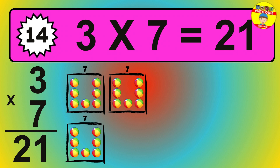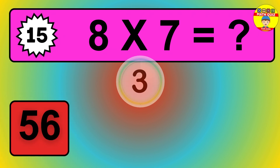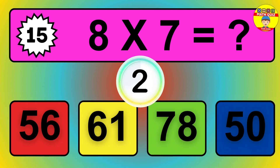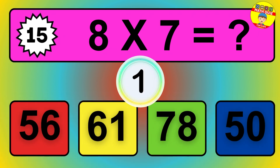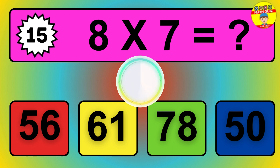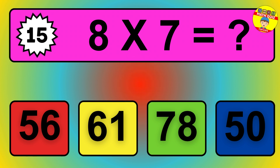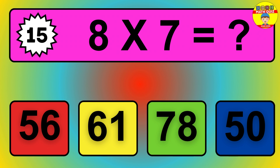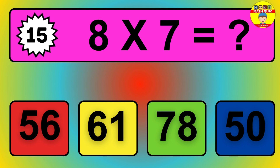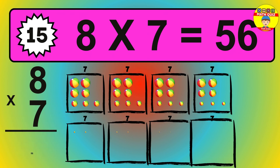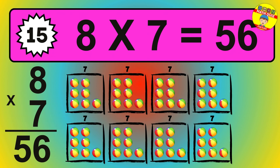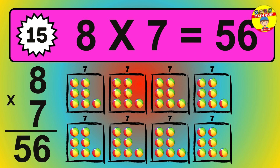Question 17. 4 times 8 equals what? The answer is 4 times 8 is 32. To calculate, we have 4 groups with 8 balls each one. So, how many balls do we have? 32 balls.